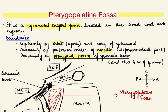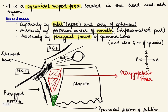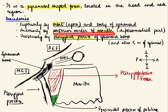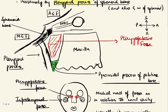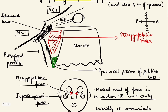Pterygopalatine fossa is a pyramidal shaped fossa located in the head and neck region. It is bounded superiorly by the orbit, more specifically the posterior part of the orbit also known as the apex of orbit and the body of sphenoid bone. Anteriorly it is bounded by the posterior border of maxilla, and posteriorly by the pterygoid process of sphenoid bone and also by some part of the greater wing of sphenoid bone. Let us understand this better with a sagittal section diagram of the pterygopalatine fossa.